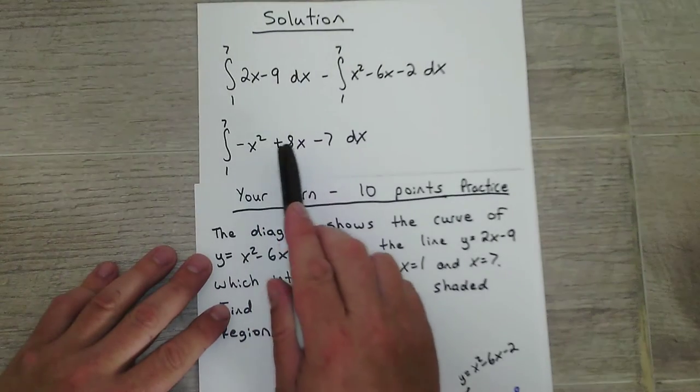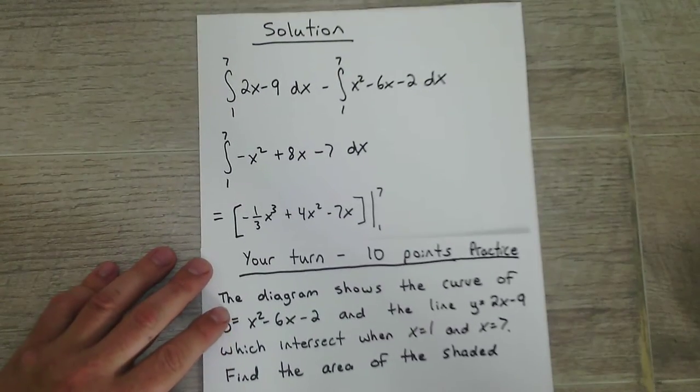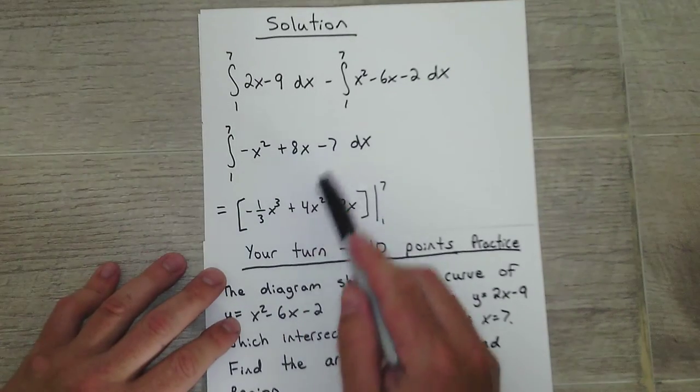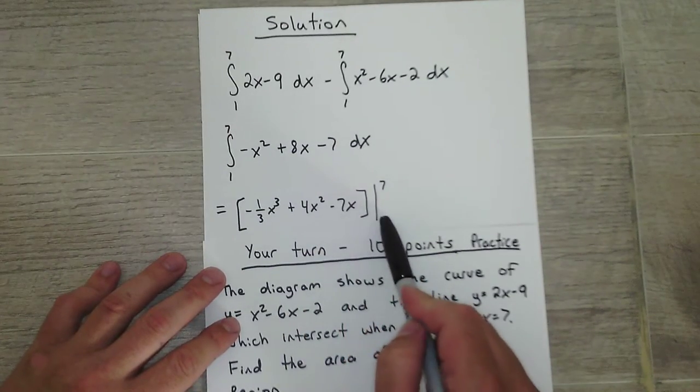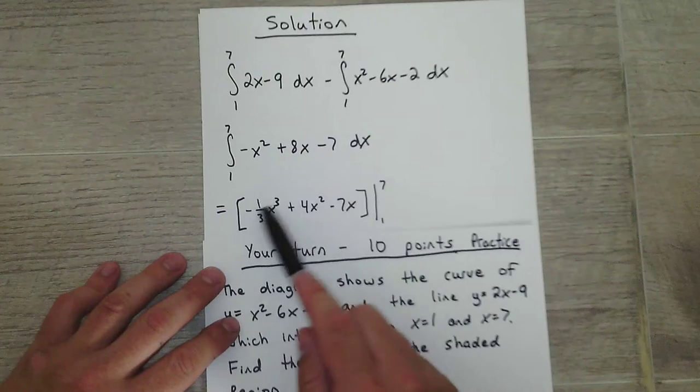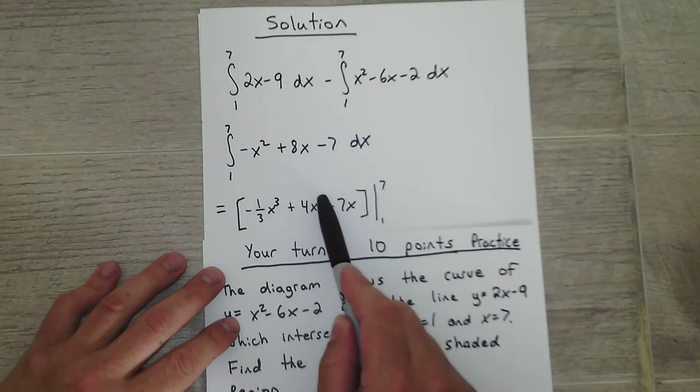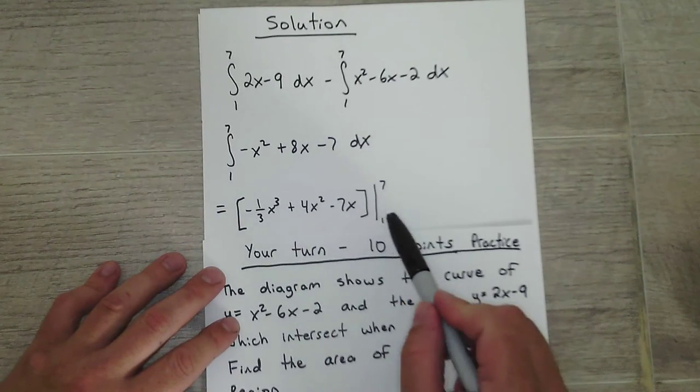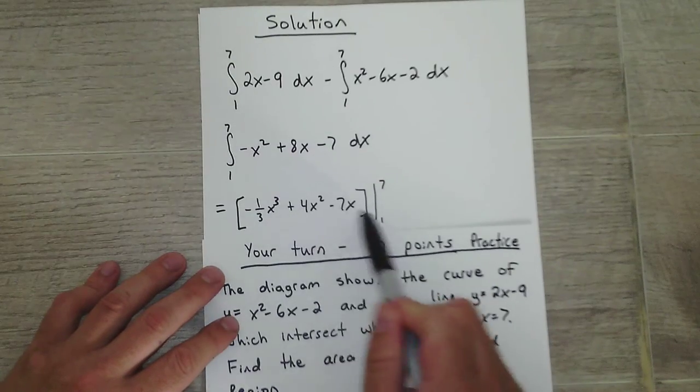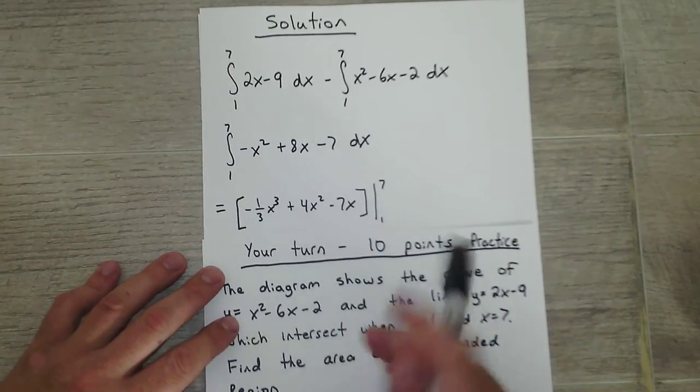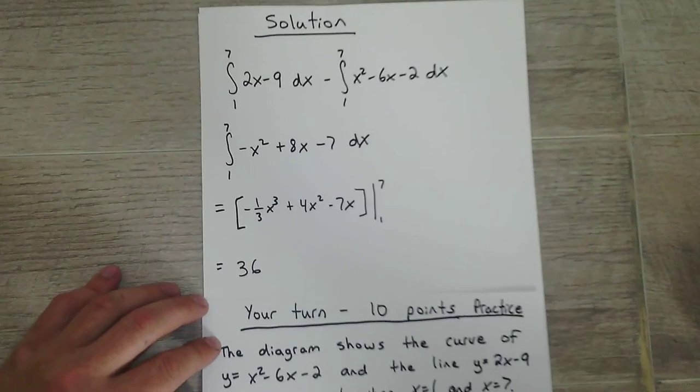Then you just take the integration of each of these separately. That's the integration of these. I'm going to evaluate it from 1 to 7. So I plug in 7 to this. Get an answer. Then I subtract it from what answer I get when I plug in a 1.